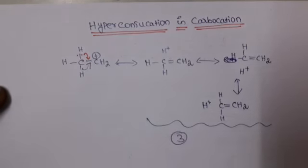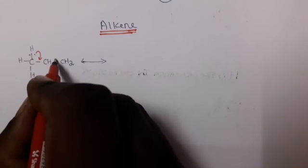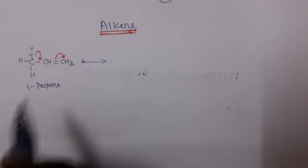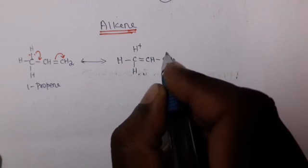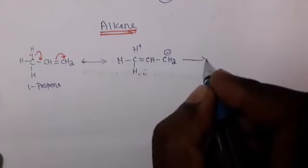Now let us explain how hyperconjugation takes place in Alkenes. Taking the example CH3 single bond CH double bond CH2, which is 1-propene, any one of the Hydrogens will be contributing to hyperconjugation. One Hydrogen is transferred to form a double bond, and that double bond shifts over CH2 to form a negative charge, so the single bond becomes a double bond giving CH single bond CH2 minus.